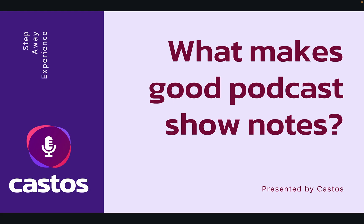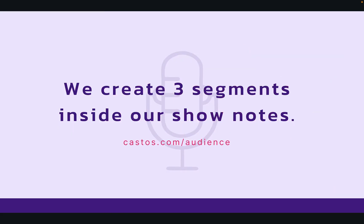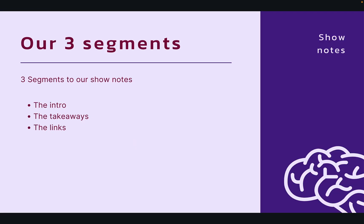What makes good show notes? We create three segments for our Audience podcast, which is produced by our team at Castos Productions. You can hire Castos Productions by visiting castos.com. Our three segments are: number one, the summary; number two, the takeaway; and number three, the links. Show notes should first and foremost focus on providing value for your audience before you start thinking about SEO robots.